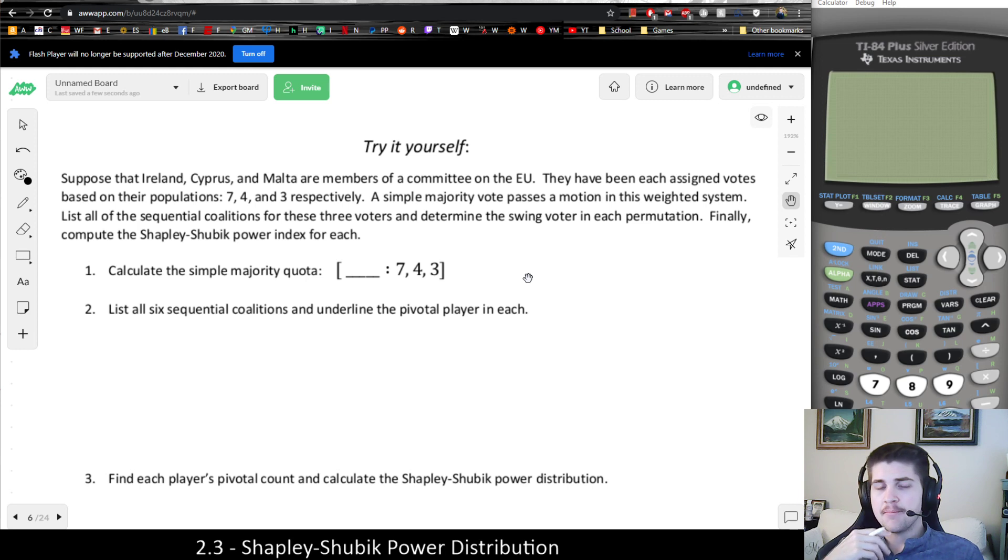So basically, we do exactly what we did in the last video. Just compute the complete Shapley-Shubik index by listing all the permutations, finding the pivotal player, which is a synonym to swing voter. First step though, we need to find the quota.